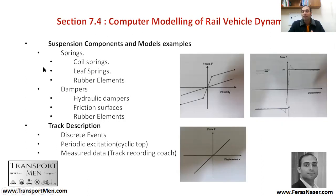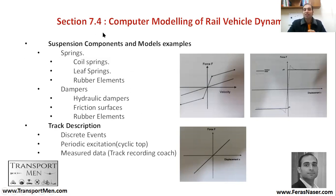Looking at model component examples: a spring has a linear relationship between force and displacement. Elements such as coil springs, leaf springs, and rubber elements can all be modeled as springs, though their exact mathematical behavior differs. For dampers, you have hydraulic dampers, friction surfaces, and rubber elements — all requiring mathematical representation.